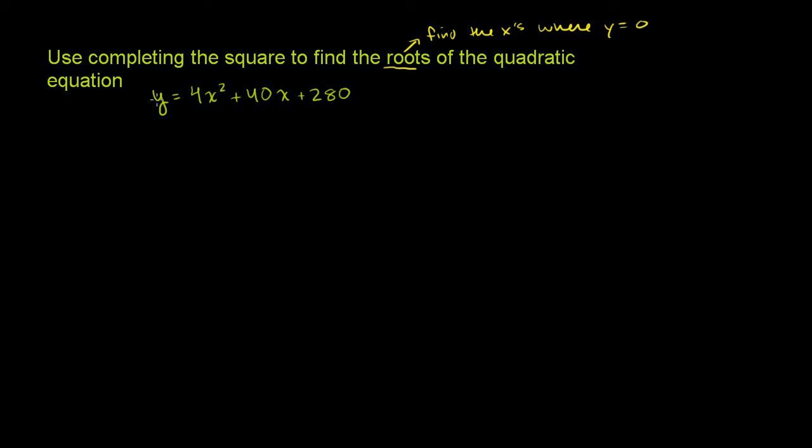That will make y equal 0. So to find the x's, let's just make y equal 0 and then solve for x. So we get 0 is equal to 4x squared plus 40x plus 280.